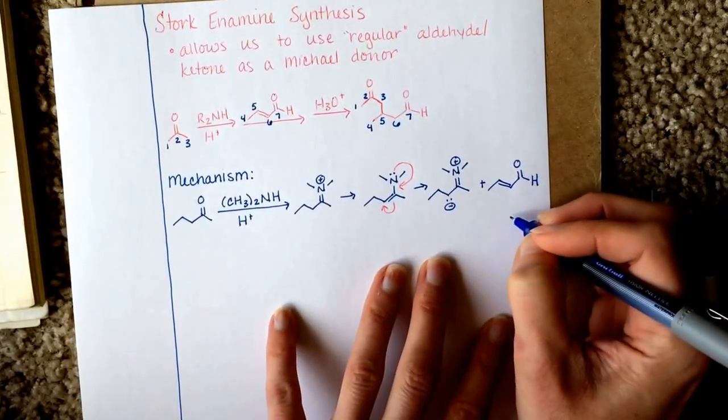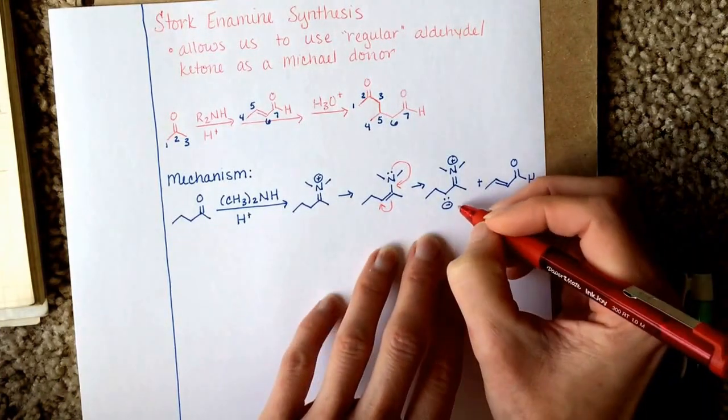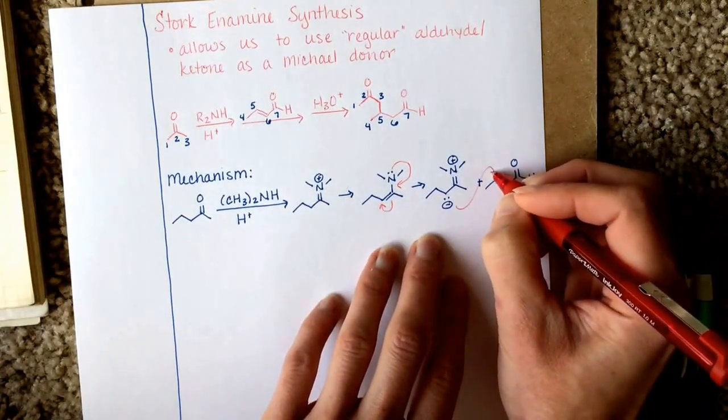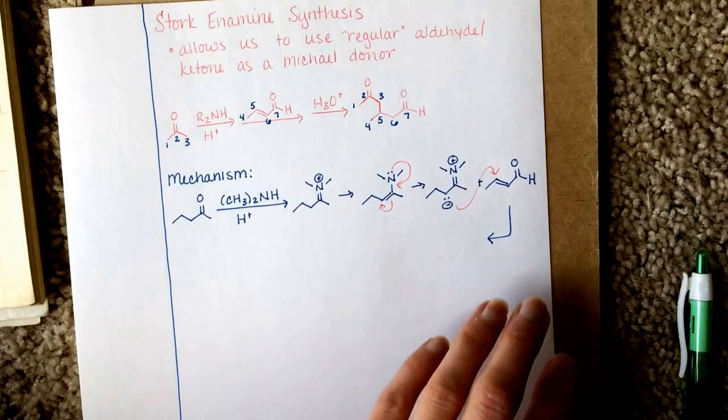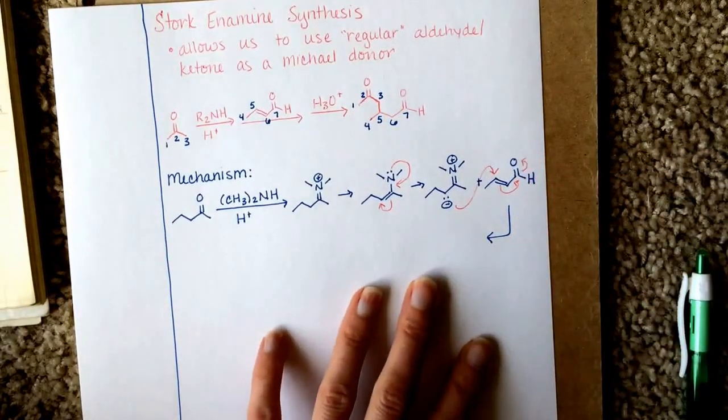I'm going to use this Michael acceptor again. And this will attack at the beta site, because it's a weak nucleophile. And we'll shift our electrons around, just like we do in the Michael Addition reaction.